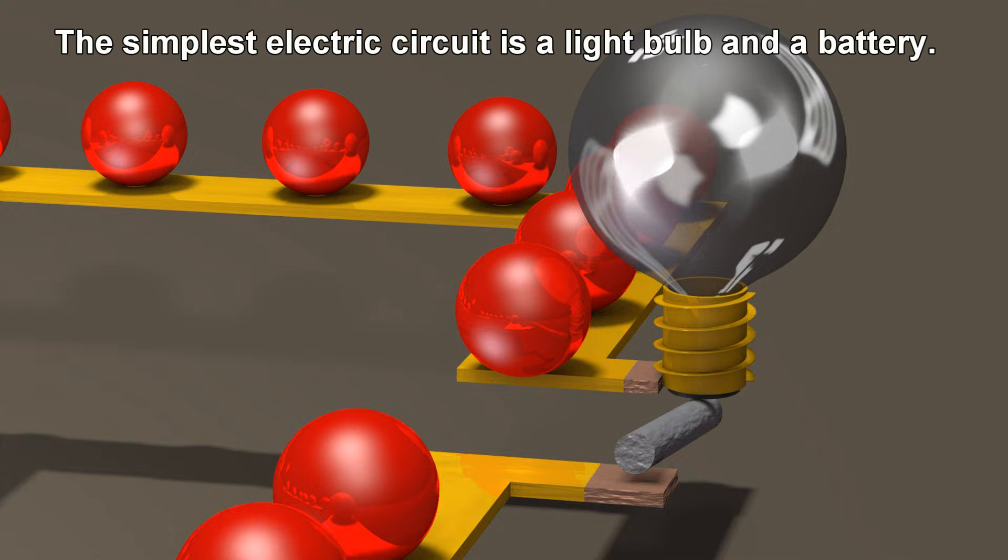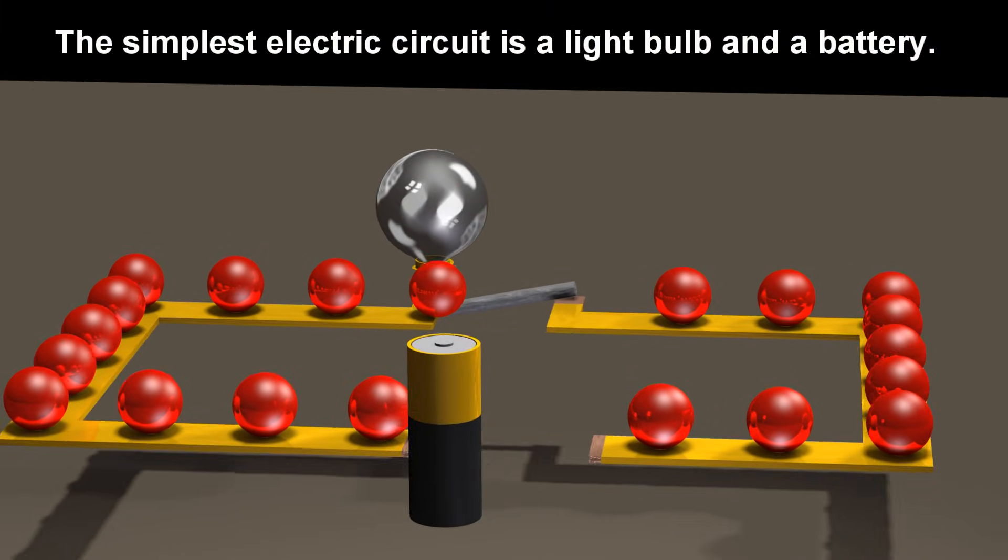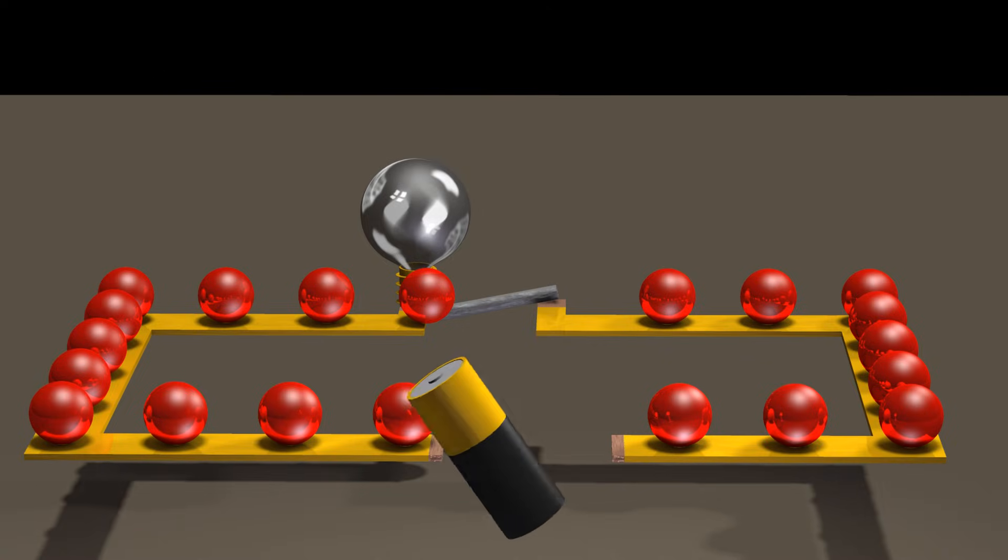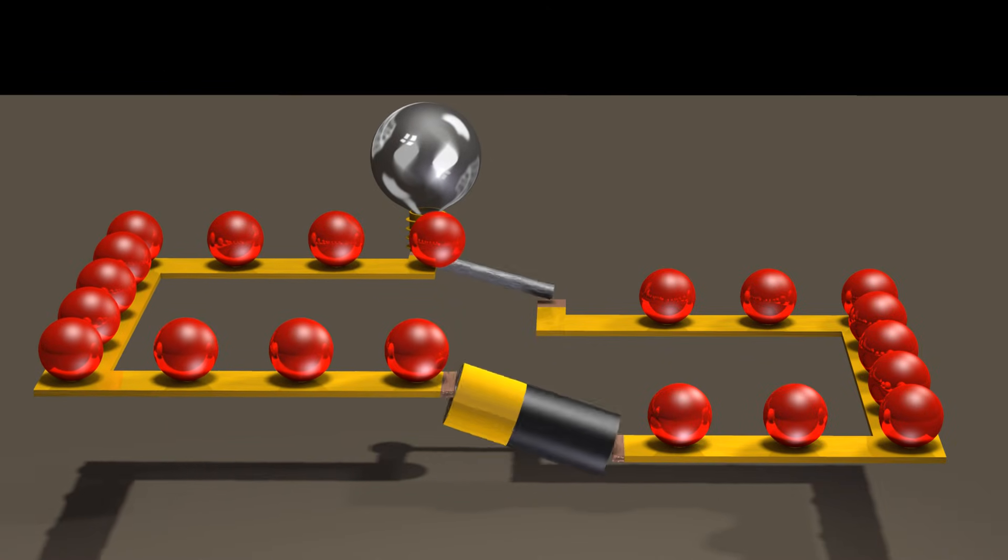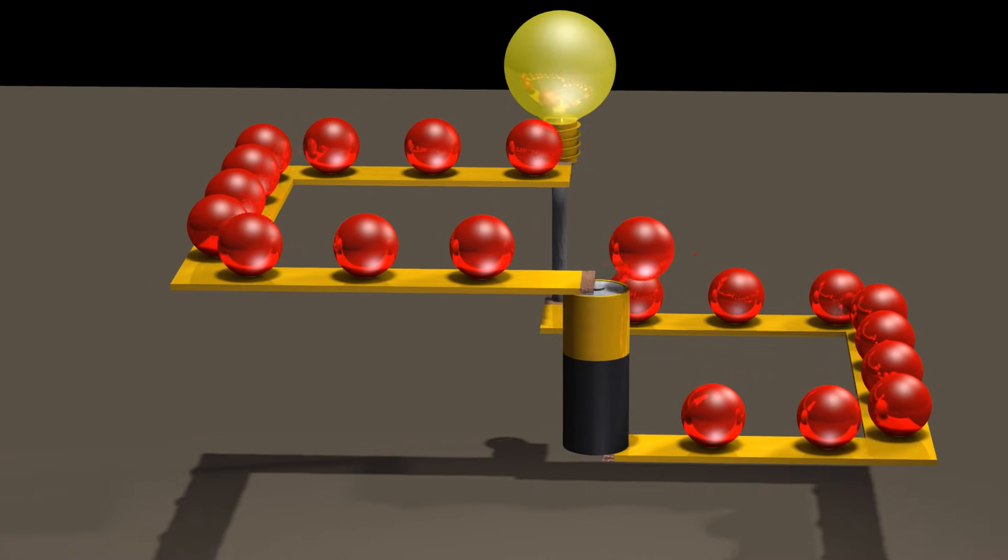The simplest electric circuit is a light bulb and a battery. The battery creates a force pushing the charged particles in the wire, causing them to flow in a loop around the circuit.